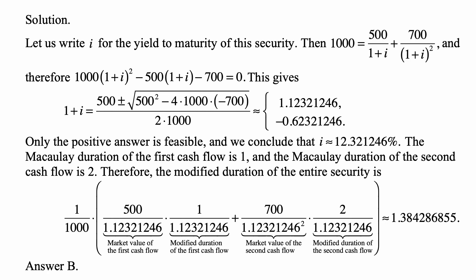The modified duration of the entire security is the weighted average of modified durations of those two cash flows. You get the modified durations by dividing the Macaulay durations by 1 plus the interest rate, which we just calculated.